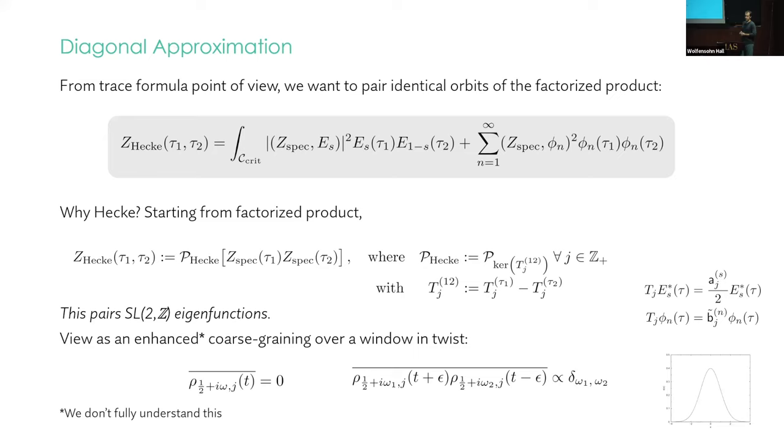So what does it mean to have the diagonal approximation? Well, that's a pairing of orbits for us. The orbits are the eigenfunctions. So we just want to pair the eigenfunctions with one another. So we start with a factorized product. You imagine dropping all off-diagonal terms. That is by definition, the diagonal approximation to that product. And so the right hand side of this is diagonal in this SL(2,Z) eigenspace. So this is our diagonal approximation to a factorized product of Z_specs. And we call this Z_Hecke.